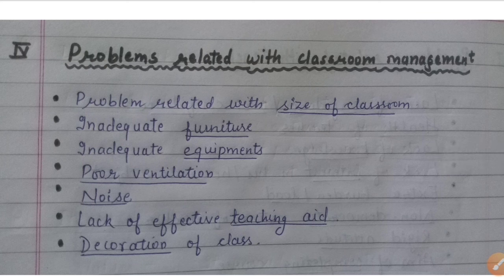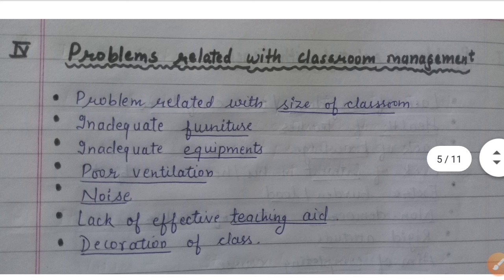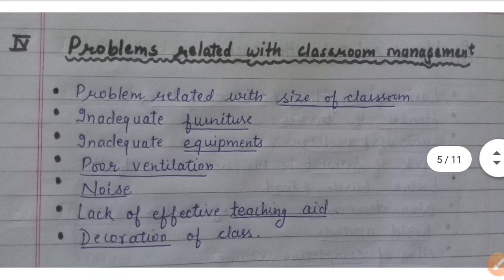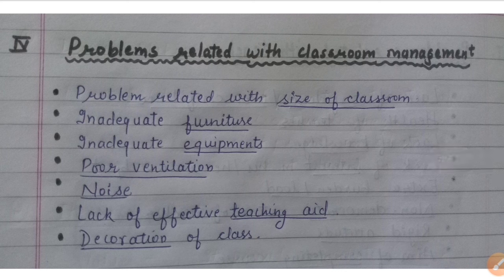The next issue is problems related with classroom management. The first point is problems related with the size of classroom — if the classroom is too big, children don't listen well; if it is too small, it becomes overcrowded and children feel suffocated. The next point is inadequate furniture. Classrooms need proper desks and tables, and if the furniture is inadequate or uncomfortable, children will not be able to learn properly.